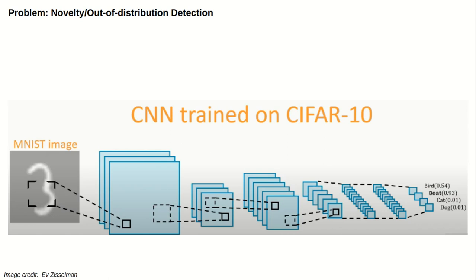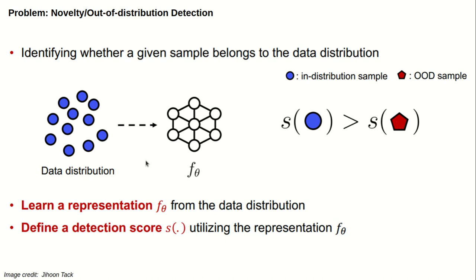More concretely, for detecting out-of-distribution data you learn a representation Fθ based on the in-distribution data and define a detection score S, such that the score for in-distribution samples is larger than the score for out-of-distribution samples.